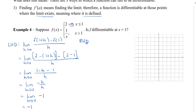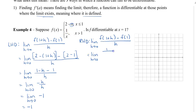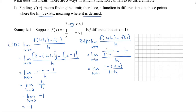Now let's check the right-hand derivative. It's the same initial expression: the limit as h approaches 0 of f of 1 plus h minus f of 1, all divided by h. But this time we use the second function, which is the 1 over x piece. So we have 1 over (1 plus h) minus 1 over 1, all divided by h. We find a common denominator to get 1 minus (1 plus h), all divided by (1 plus h).